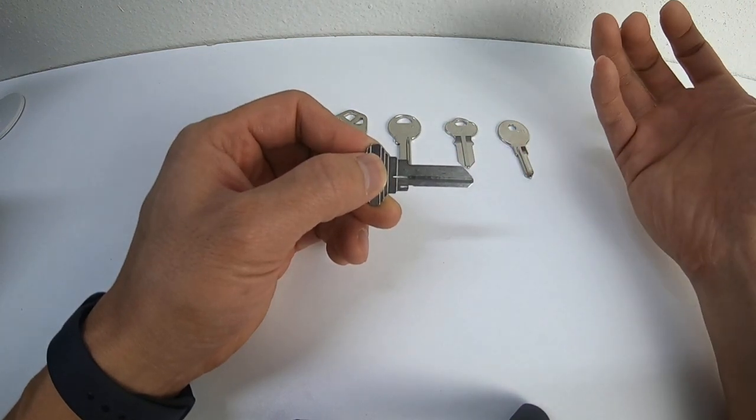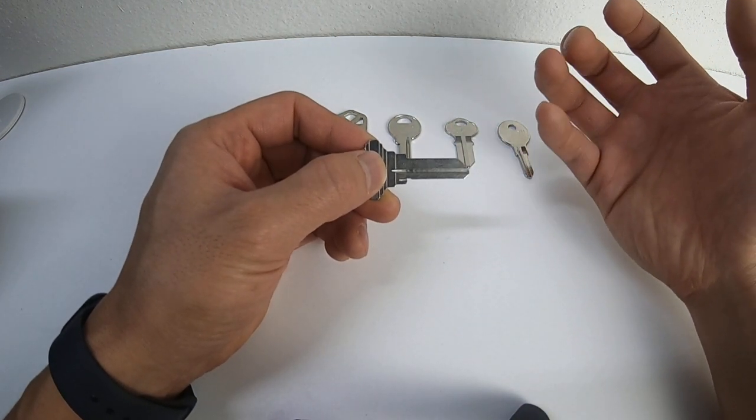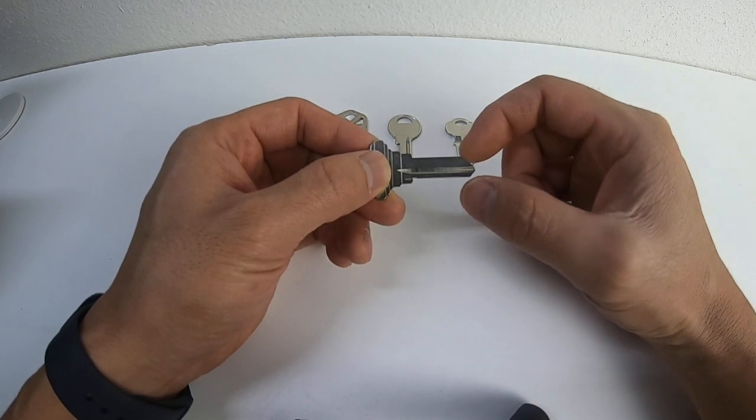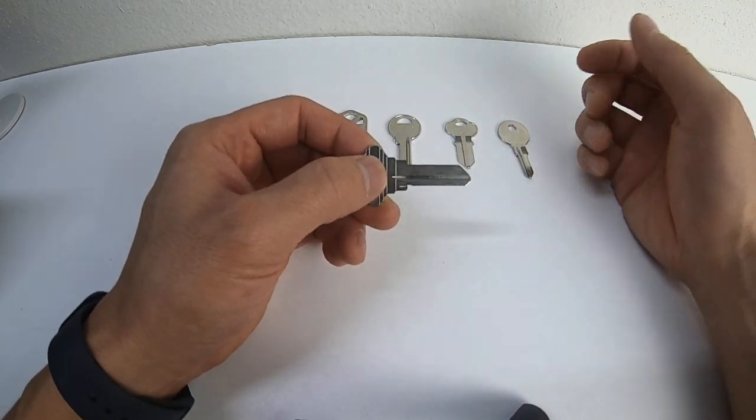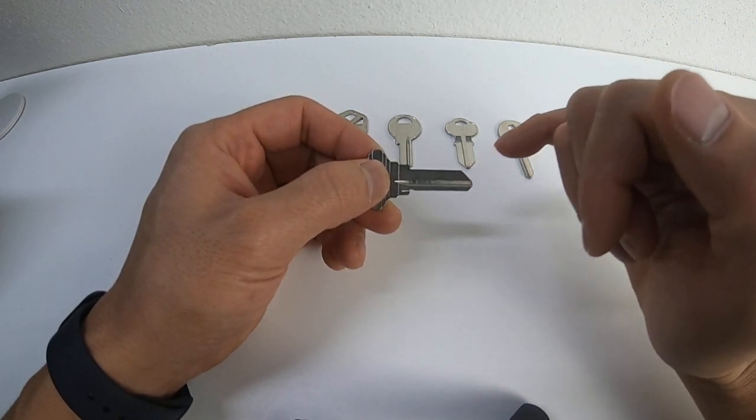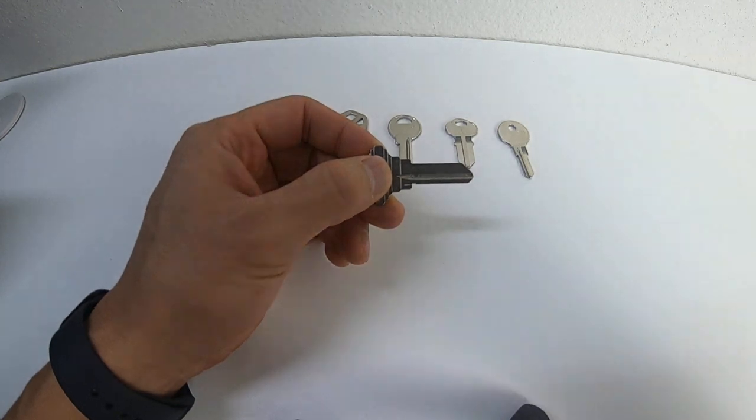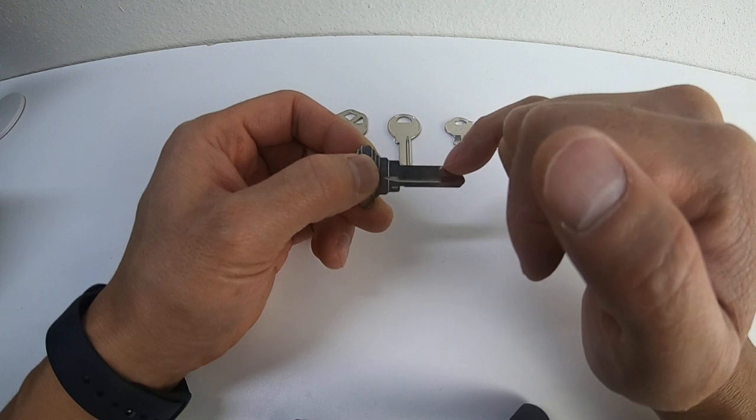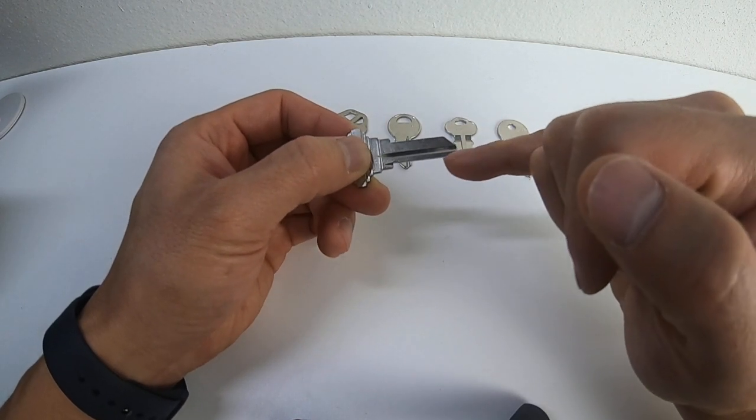Those use another tool called a laser cutting machine. We'll get into that later. So this is a single-sided edge cut key, meaning that we're only cutting on this side right here. We're not cutting on this side, so this is just a single-sided edge cut key.